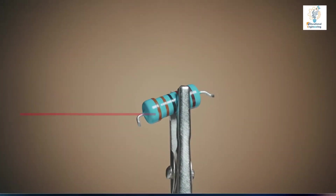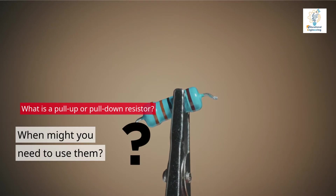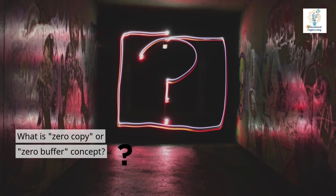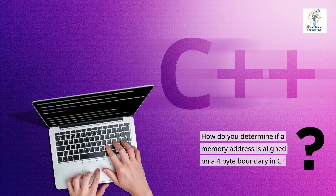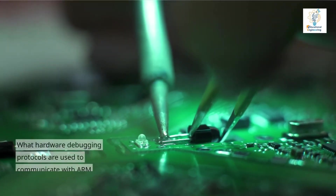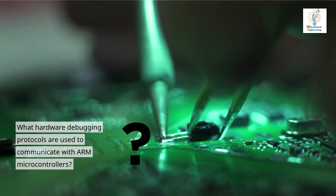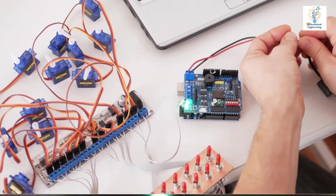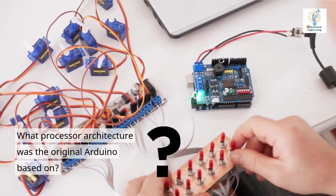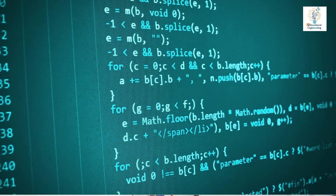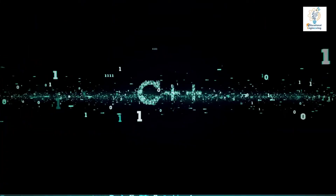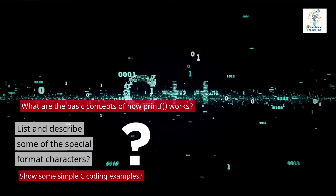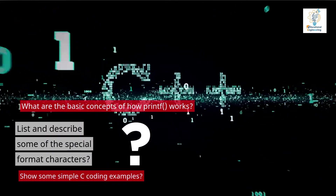Have you ever written any C functions or algorithms that used fixed-point math? Why did you? What is a pull-up or pull-down resistor? When might you need to use them? What is the zero-copy or zero-buffer concept? How do you determine if a memory address is aligned on a 4-byte boundary in C? What hardware debugging protocols are used to communicate with ARM microcontrollers? What processor architecture was the original Arduino based on? What are the basic concepts of what happens before main is called in C? What are the basic concepts of how printf works? List and describe some of the special format characters.